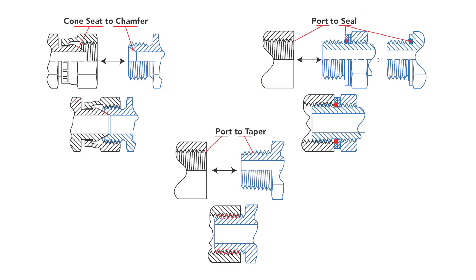In swivel applications, BSPP and metric fittings commonly seal via an inverted cone seat or chamfer. If it is a port application, an o-ring and washer, elastomeric seal, bonded washer, or other type of seal is required.